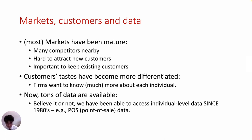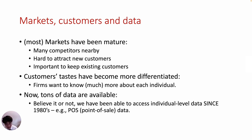Moreover, customers can now easily switch products and services. We can take American instead of Delta to get to New York City. And even today, tons of people are switching from Verizon to AT&T and vice versa. So companies have a strong need for strategies to keep their existing customers from competitors. In addition, customers' tastes have become more differentiated. Customers are very smart — they clearly know what they need and want, and their needs and wants are becoming more specific. To meet these individually differentiated needs, firms are putting more effort into investigating individual customer-level tastes and preferences.